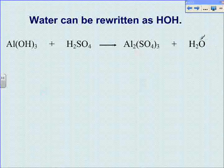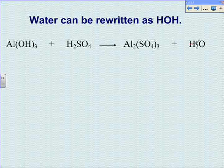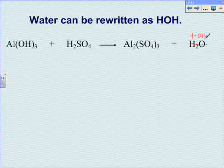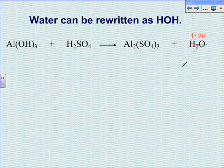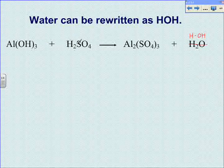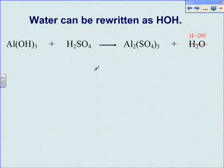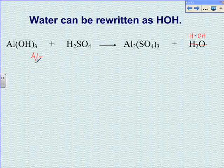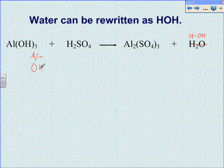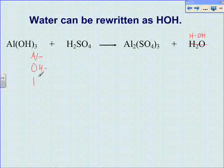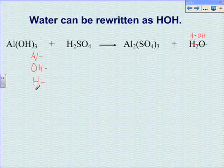Any time that you have water in an equation, you can rewrite water as H and OH. This doesn't change the compound — it just rearranges the elements. This is helpful when you have hydroxide and hydrogen on the left side of the equation, and it can make it much easier to balance the equation. Now we can write aluminum, hydroxide, hydrogen, and sulfate, because we have a sulfate on the right side.